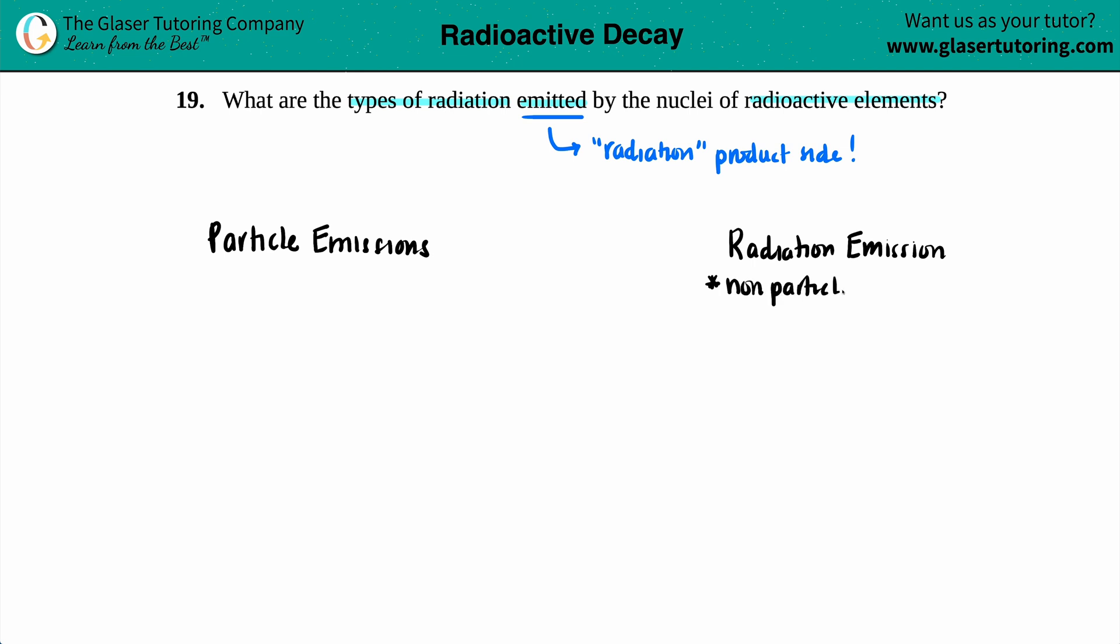The only one that is non-particle-based is gamma radiation, or we call it gamma rays. We call it a gamma ray because it's not a particle. A gamma ray, if we write it out in nuclear notation, it would be that gamma symbol, that fancy little Greek Y, but it has no atomic number and no atomic mass because it's part of your electromagnetic spectrum.